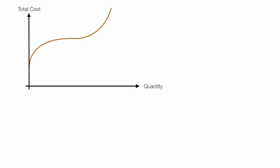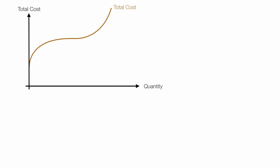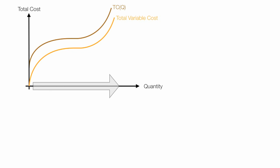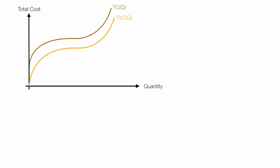First, I draw the total cost curve in — total cost is a function of quantity, it changes as quantity changes. Now I'll draw in the total variable cost; it's also a function of quantity, it changes as quantity changes. And lastly, I'll draw in the fixed cost curve — it's actually just a straight line, and it doesn't change as quantity changes; it's fixed.